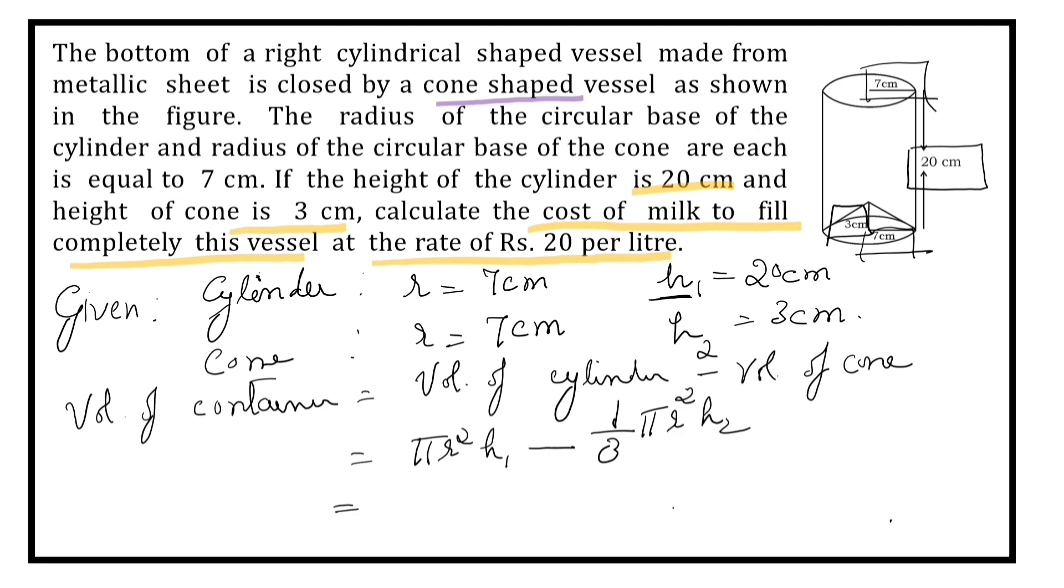Now, what is common in these two things? Pi R square. We will remove it outside the bracket. In the next stages, the problem will become cumbersome if we do it two times. Same radius, so no worry. Pi R square, H1 minus 1 by 3 H2.